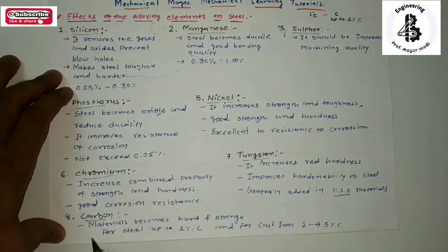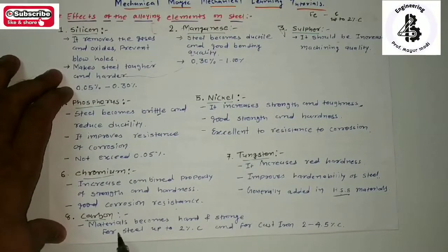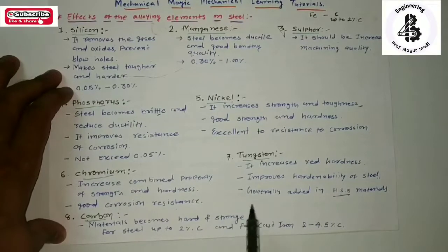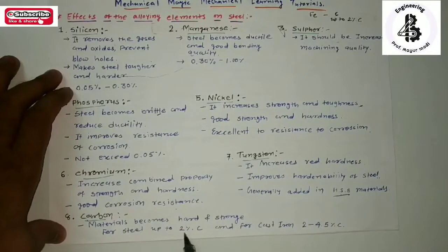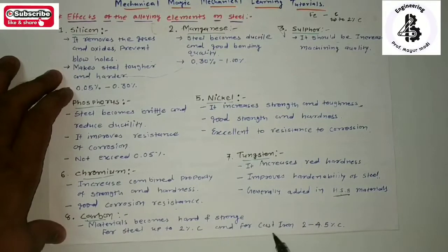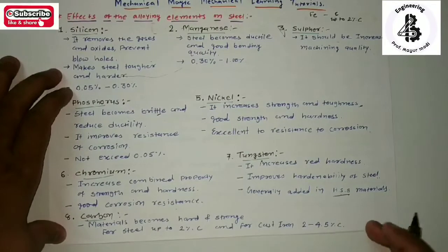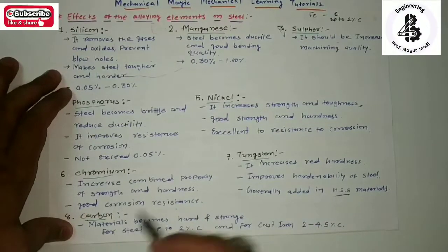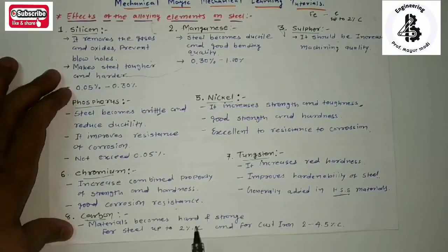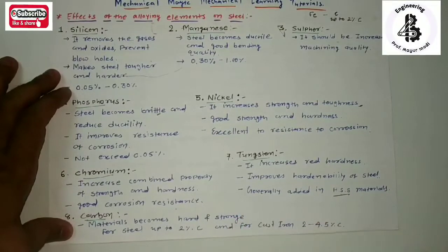Then the important element: carbon. With the addition of carbon, materials become hard and strong. Generally for steels, up to 2% carbon is present, and for cast irons, 2% to a maximum of 4.5% carbon is present. This relates to the iron-iron carbon diagram, which covers the categories of steels and cast irons.